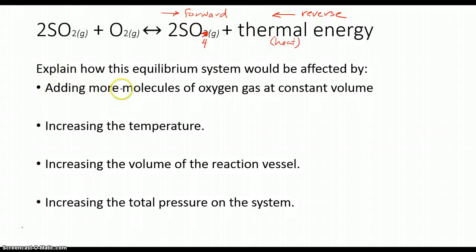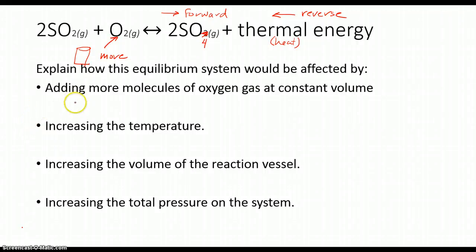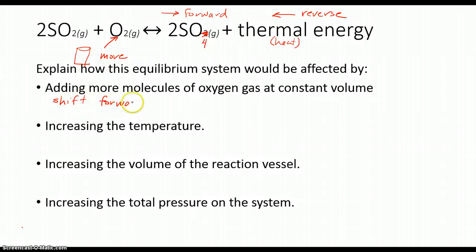If I add more molecules of oxygen gas at a constant volume, I have more O2 on the reactant side. Using the balance scale analogy from the video — if I'm adding more oxygen, I'm adding extra weight to the reactant side, so it obviously shifts to the product side. More reactant is becoming product, so it is going to shift forward, to the right.